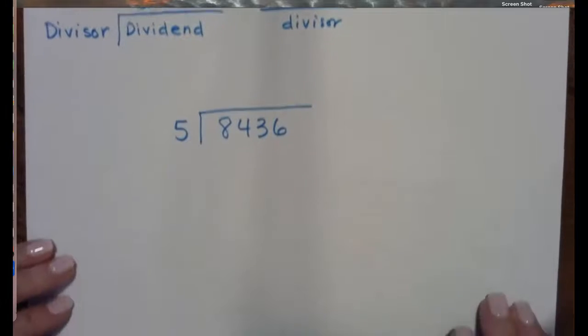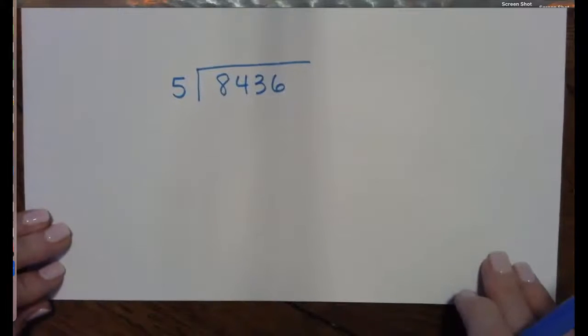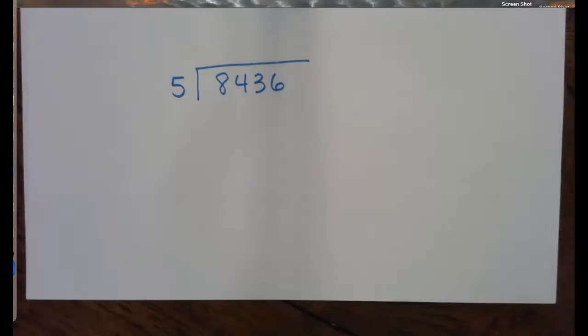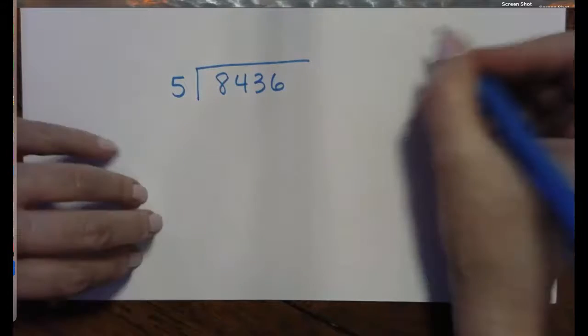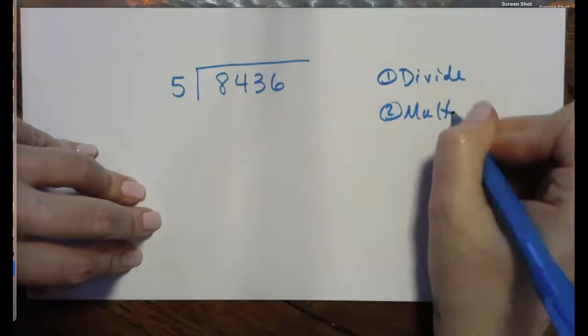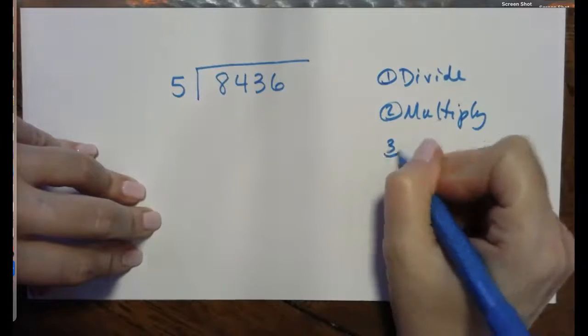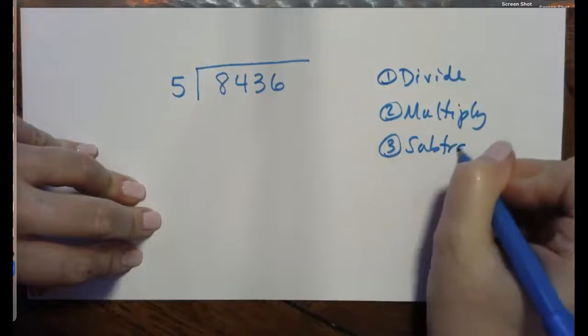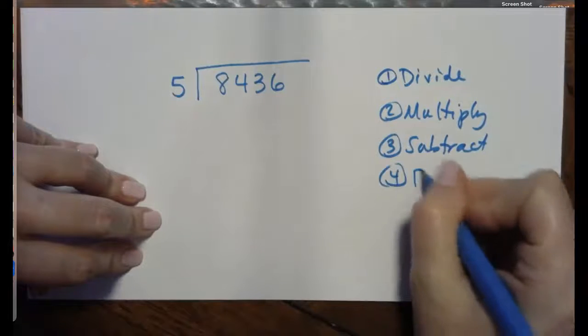So I'll be using those words over and over again. Let's take a look at this old school division problem, and we're going to go through the steps. They are the same steps we use in polynomial long division. They are divide, then multiply, subtract, and bring down.